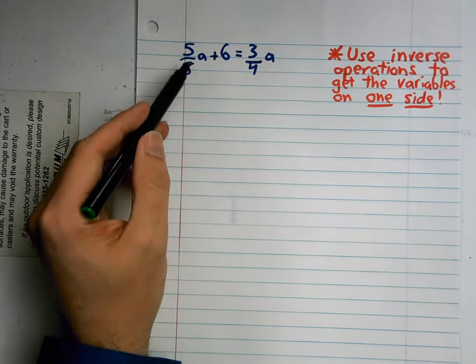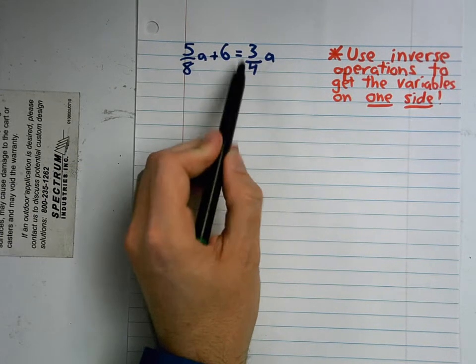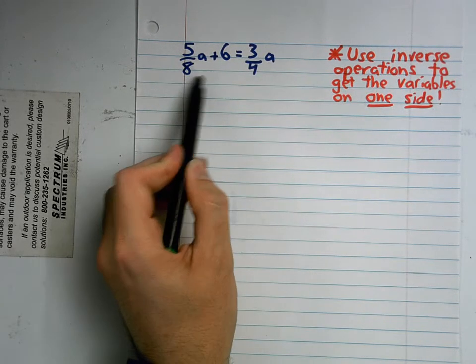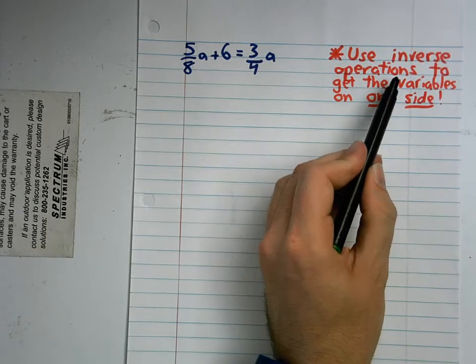So in this case, 5/8 times a and 3/4 times a, I already have a variable on this side without a constant here. So I'm going to move this 5/8 times a, I'm going to get it over on this side by using the inverse operations.